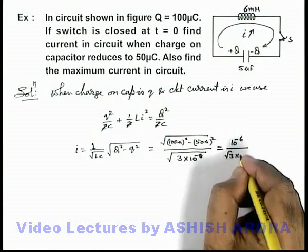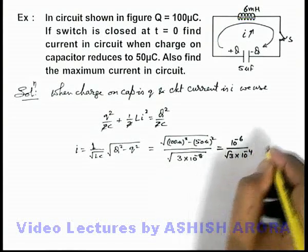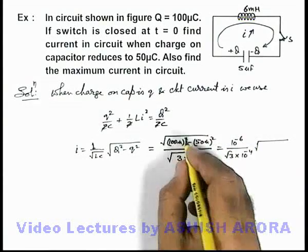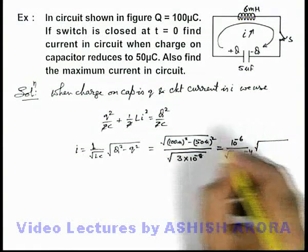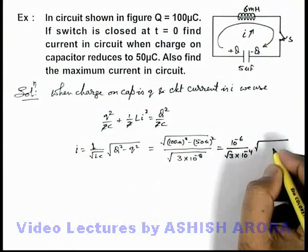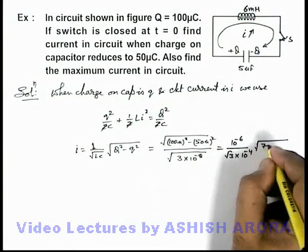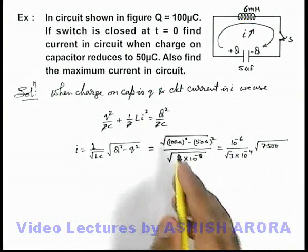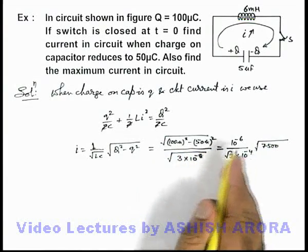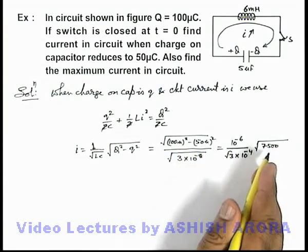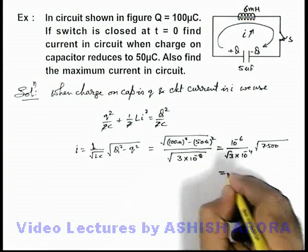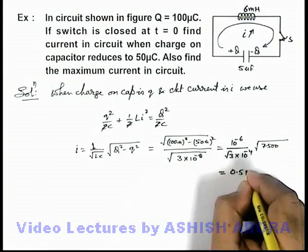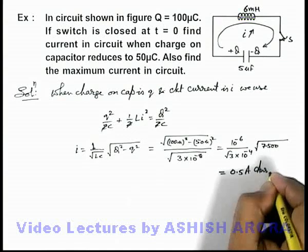Multiplied by this can be written as 10⁻⁴ multiplied by, inside the radical sign we can write 100² - 50², that can be written as 7500, this is 10,000 - 2500. So on further simplifying we'll get 0.5 ampere, that'll be the answer to part A of this problem.